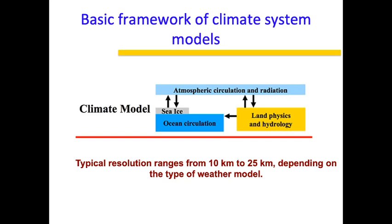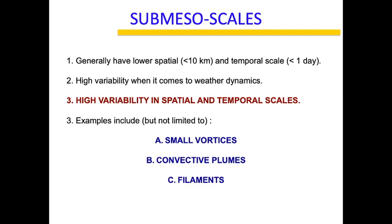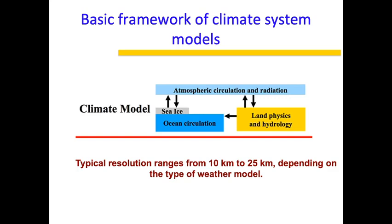So why are we having so much variability in weather? If the models are able to capture the mesoscale processes, then where does the problem lie? The problem lies in the submesoscale processes. They generally have a very low spatial resolution — less than 10 kilometers — and temporal scale is also less than one day. They have very high variability when it comes to weather dynamics, both in spatial and temporal scales.